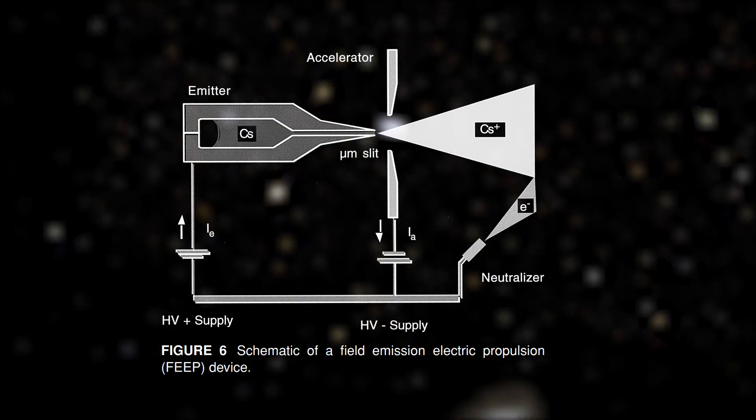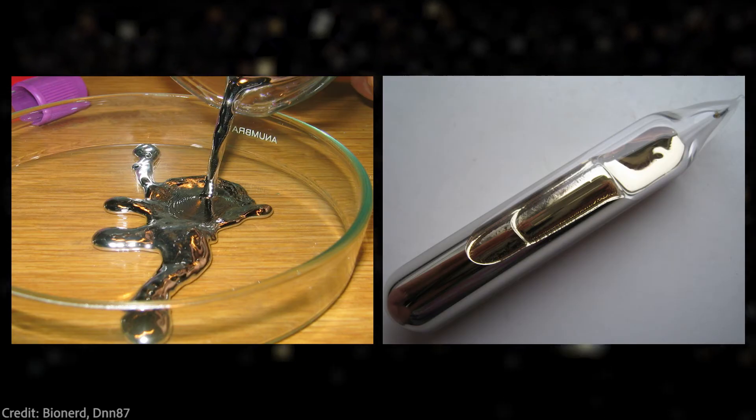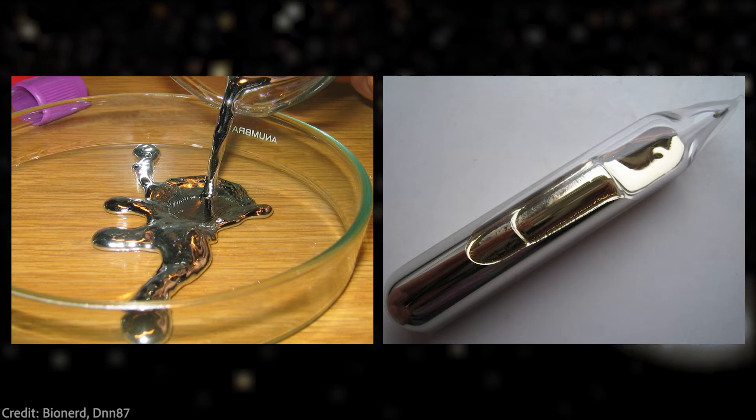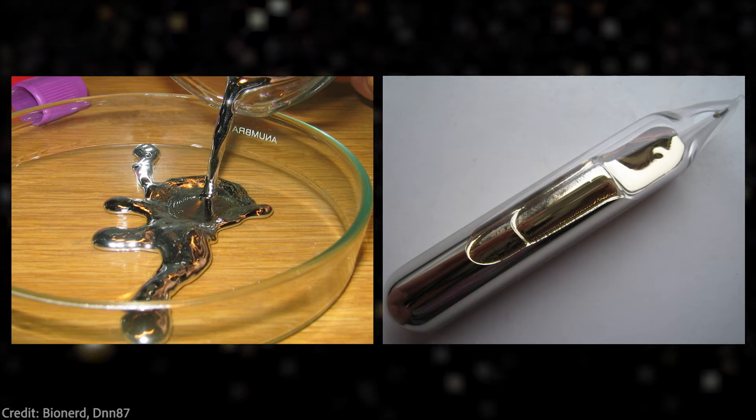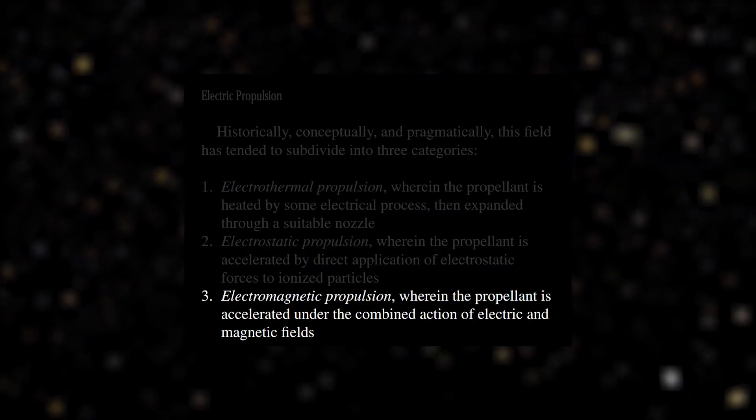There are different kinds of electrostatic thrusters with modified components. Some drives use liquid metal like cesium or mercury as fuel. Also there are colloid thrusters that use non-metallic liquids. And we still have the third type, electromagnetic thrusters.